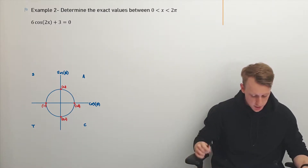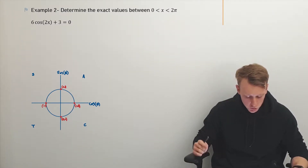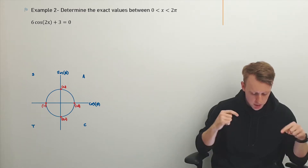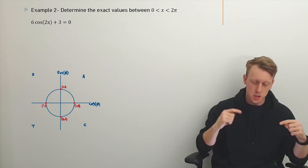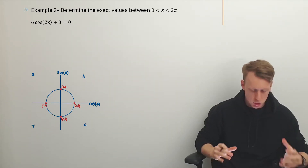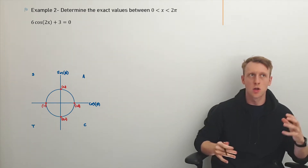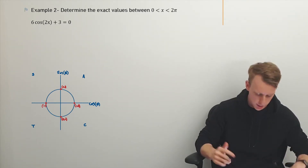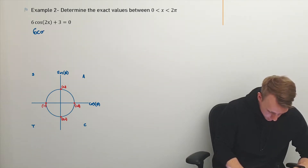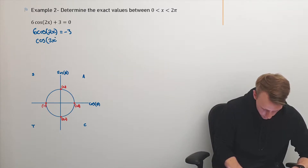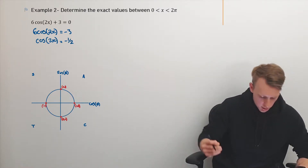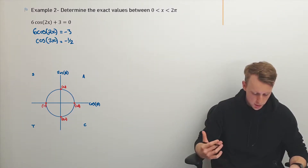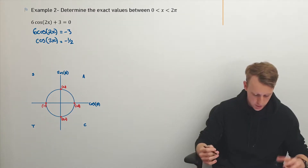So now they get a bit trickier. We have 6 cos of 2x plus 3 equals 0. The first thing here is I'm going to simplify this as much as possible — just trying to get cos of something equals something. Simplifying it out, I get cos of 2x is equal to negative one half.